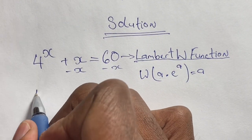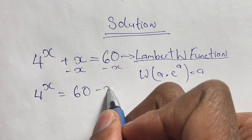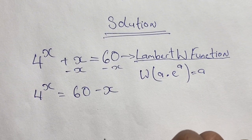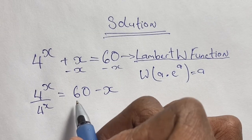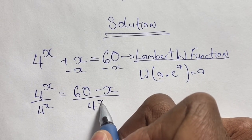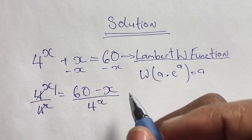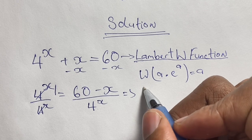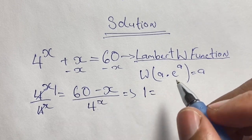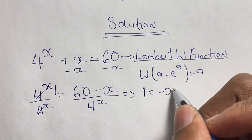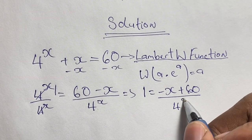We start to solve our equation by rewriting it in the form of a times e to the power of a. We begin by subtracting x on both sides, giving us 4 to the power of x is equal to 60 minus x. Then we divide both sides by 4 to the power of x, so on the left we have 1, and on the right we have negative x plus 60 over 4 to the power of x.